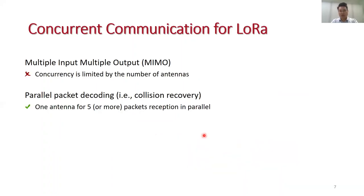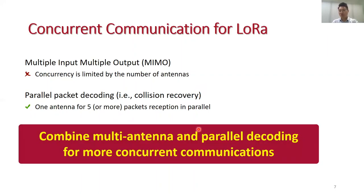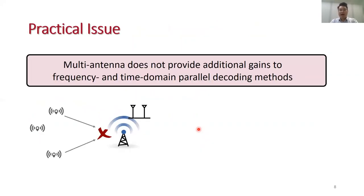Generally, the concurrency of MIMO is limited by the number of antennas, and the latest advances show that it is possible to use one antenna to decode many packets. So we were wondering, is it possible to combine these two approaches for supporting more concurrent transmissions? Unfortunately, we find that if we simply combine multiple antennas and existing parallel decoding methods, we can only get very limited performance gains.